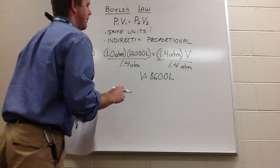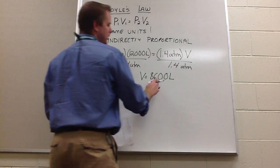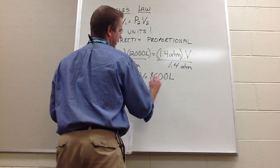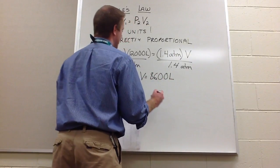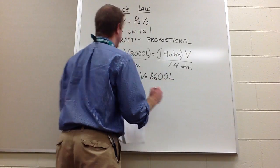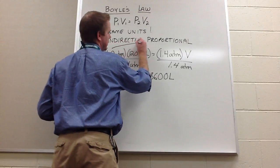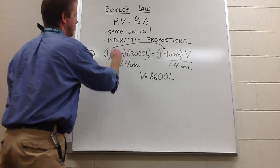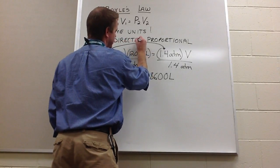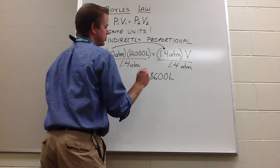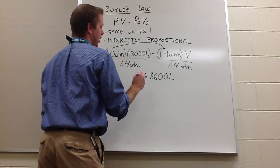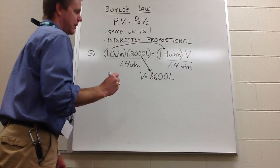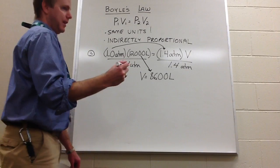Why 8,600? Because you're only allowed two sig figs, and those trailing zeros are not significant — making this the right answer. Does your answer make sense? Our pressure increased from 1 to 1.4, so looking for an indirectly proportional relationship, the volume should have gone down. It went from 12,000 to 8,600. So yes, the answer makes sense.